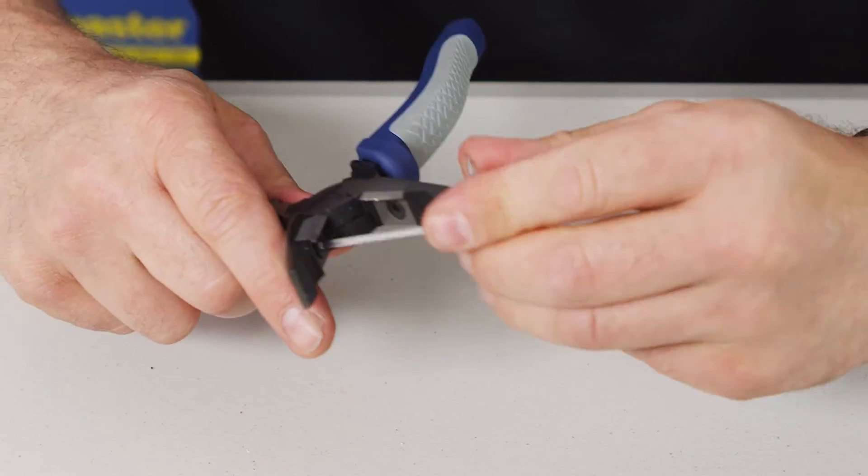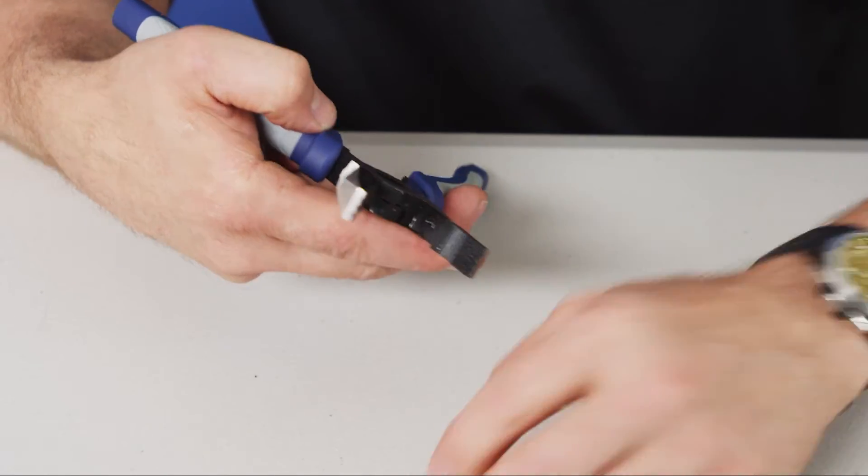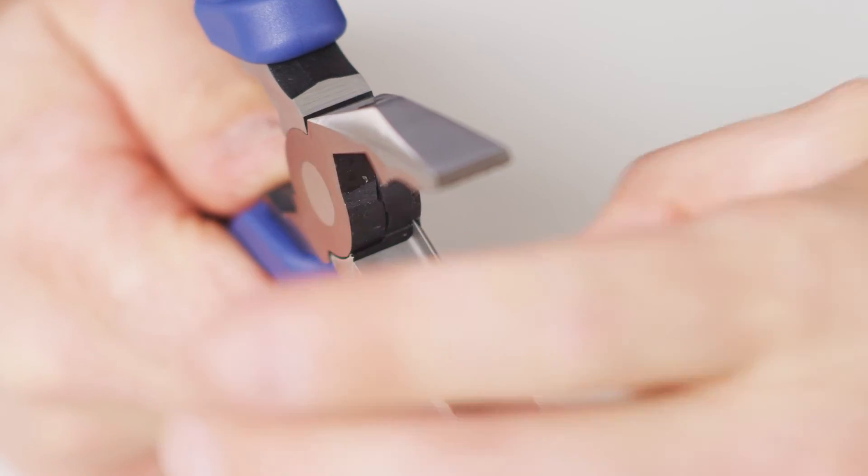I'll take out the old blade once I have removed the grub screw, like so, and insert the new one. New blade, they come with the pliers.